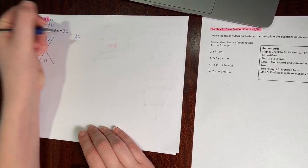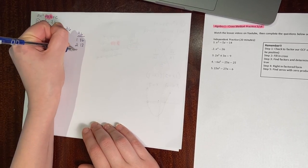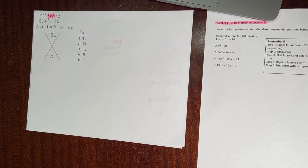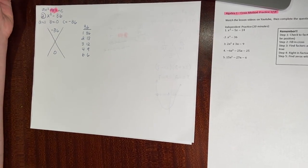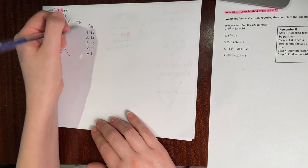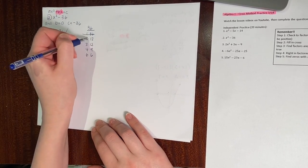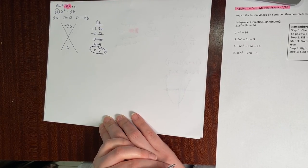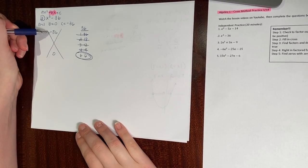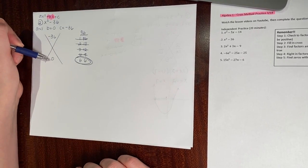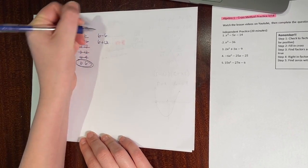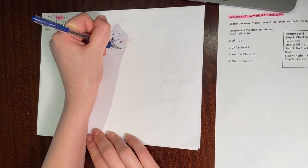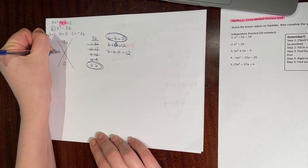I'm looking for ways I can multiply to get negative 36 and add to get 0. All my factors of 36: 1, 36, 2, 18, 3, 12, 4, 9, 6, and 6. Now which can add or subtract to get 0? 1 and 36 — never. 2 and 18 — never. 3 and 12 — never. 4 and 9 — never. So my factor pair has to be 6 and 6. I need negative 36, so I need a negative times a positive. 6 minus 6 gives me 0. So my factor pair is 6 and negative 6. Check: 6 times negative 6 is negative 36, and 6 minus 6 is 0.